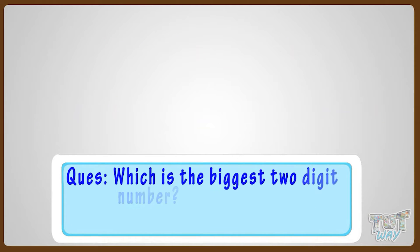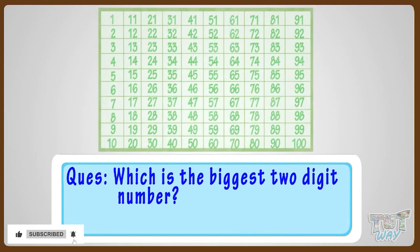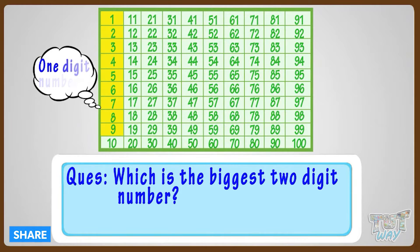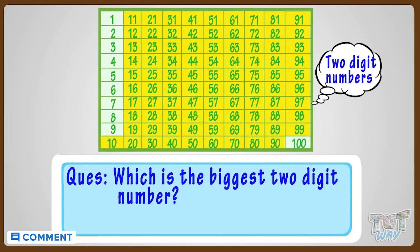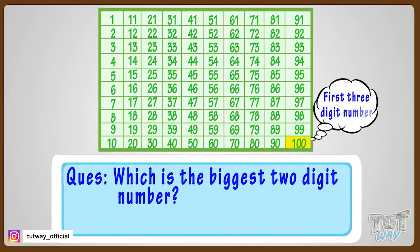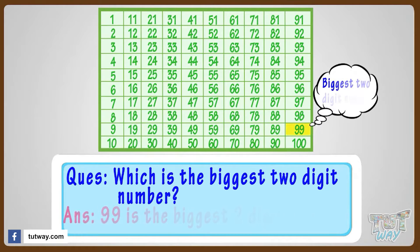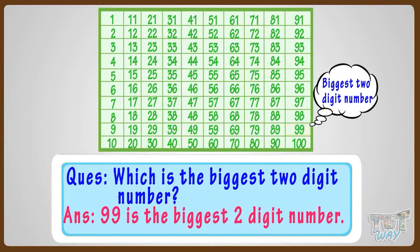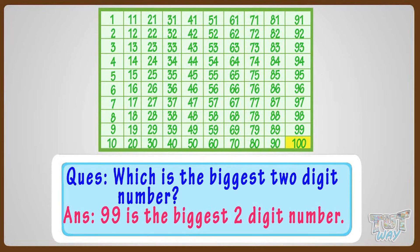Now, which is the biggest two-digit number? Let's find it out. Up to 9, we have one-digit numbers, and from 10 to 99, we have two-digit numbers. So 99 is the biggest two-digit number, as the next number is 100, which is a three-digit number.